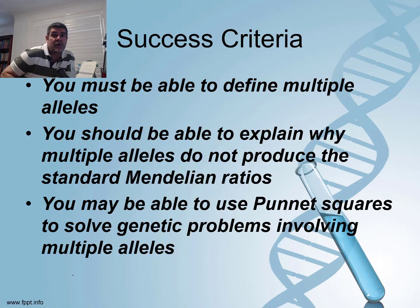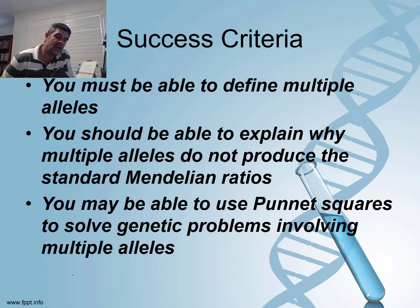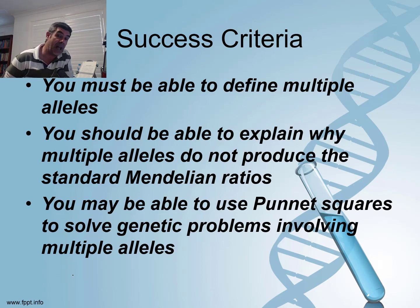What we want to do in this video is make sure that you understand what multiple alleles are, explain how they can create deviations from the standard Mendelian ratios, and see if we can use Punnett squares to help us solve genetic problems that relate to multiple alleles.